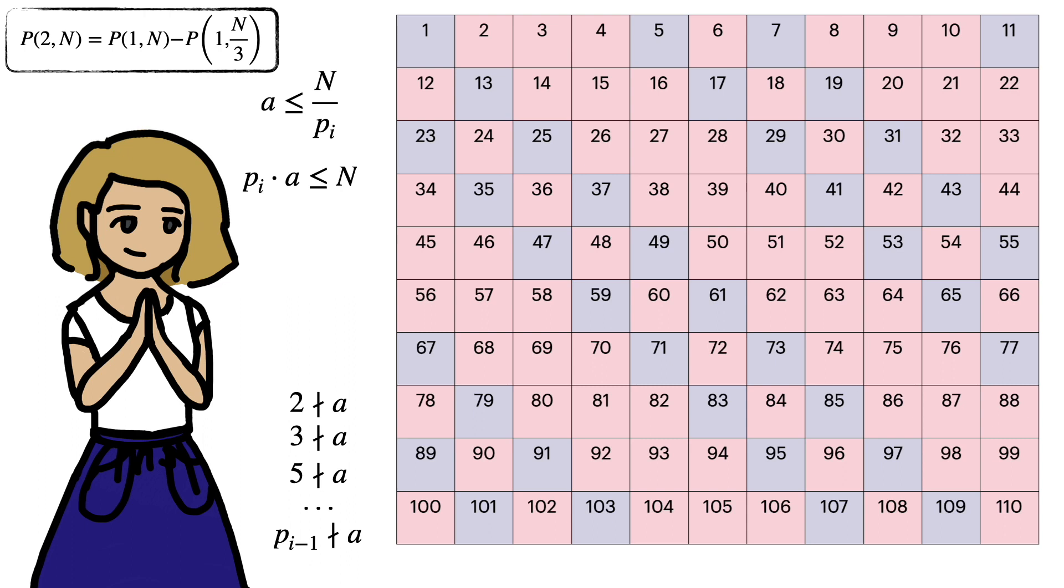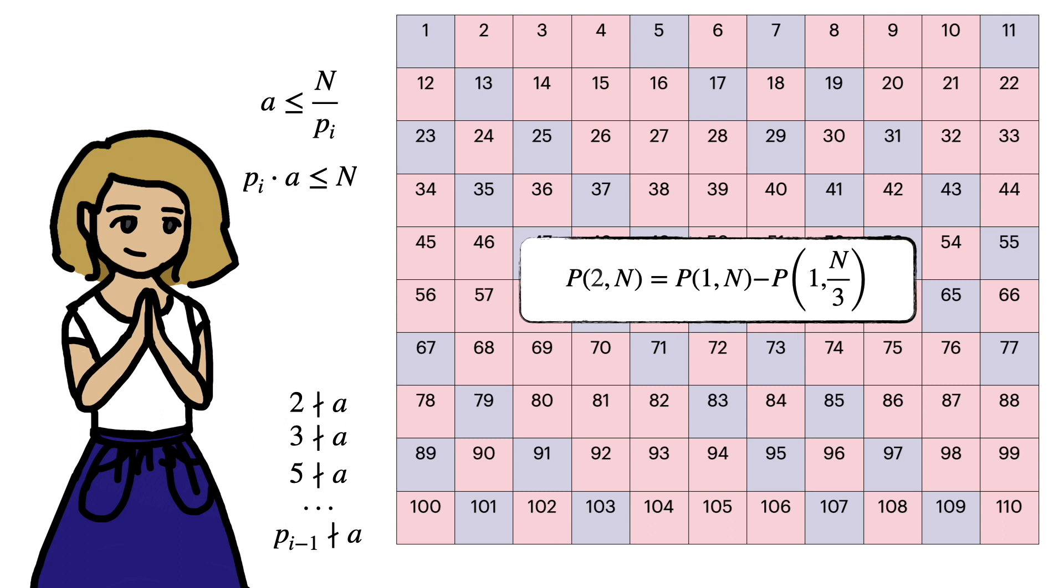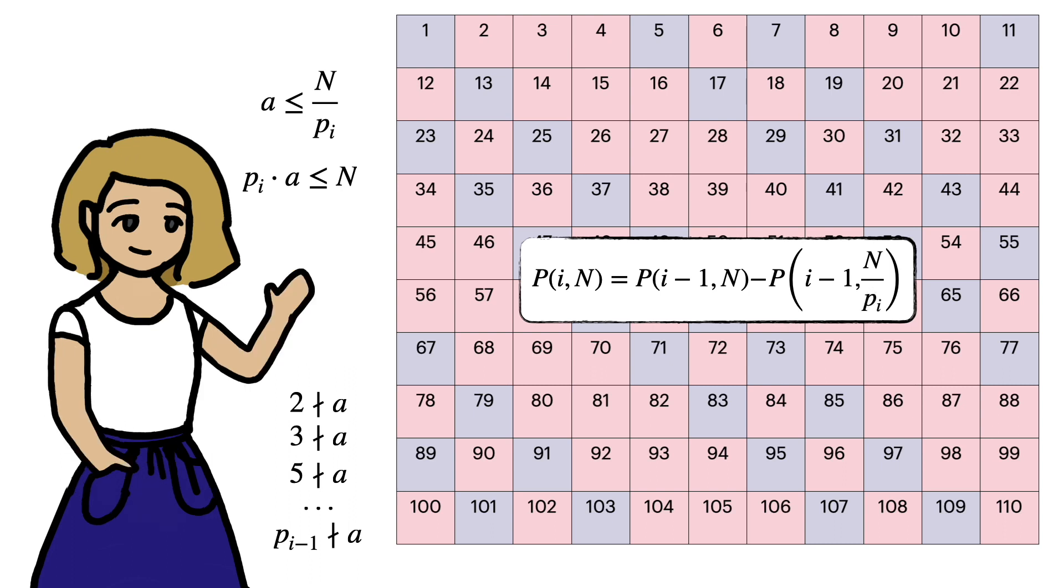So there's this recursive element that comes through where the number of blue squares after the ith iteration is given by the number of blue squares from the previous iteration, minus the number of blue squares that were below n/p_i. So, that's Euler's sieve. I'll see you in chapter 2 to derive Legendre's formula.